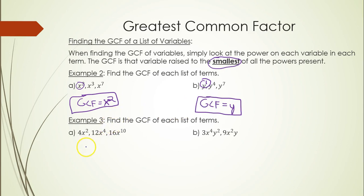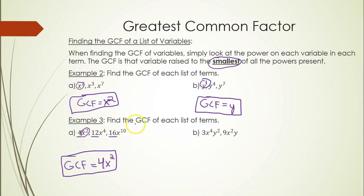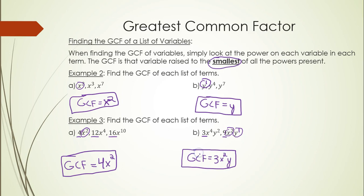In example 3, we combine numbers and variables. For 4x², 12x⁴, and 16x¹⁰: the numeric GCF of 4, 12, and 16 is 4; x is in every term with the lowest power of 2, giving x² as the variable GCF — so the overall GCF is 4x². For 3y²x⁴ and 9yx²: numeric GCF is 3, variable GCF for y is y¹ and for x is x², giving 3x²y. Remember, the variable must be present in every single term.